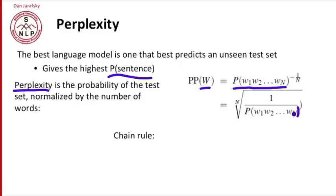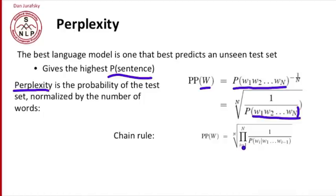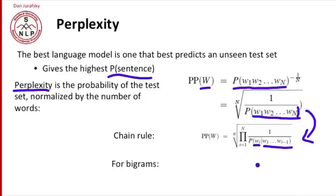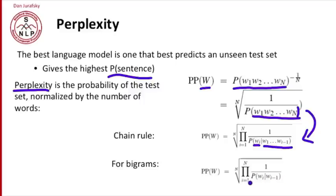By the chain rule, the probability of a string of words w1 through wn is the product over all i of the probability of each word given the entire prefix beforehand. By the chain rule, we replace the probability of a sequence of words with the product of the probabilities of each word given its prefix. And for bigrams, by the Markov approximation to the chain rule, we replace the probability of a sequence with the product of bigram probabilities. So the perplexity of a string of words is the nth root of n bigram probabilities multiplied together and inverted.